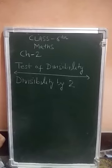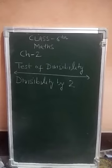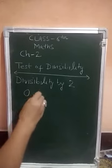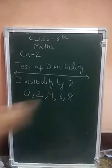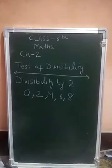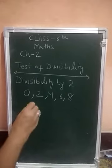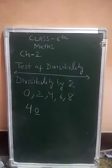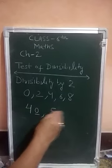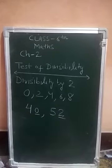A number is divisible by 2 if the digit at the 1's place is divisible by 2 — that is, if the digit at 1's place is 0, 2, 4, 6, or 8. For example, 40 is divisible by 2 because the digit at 1's place is 0. If I have the number 52, the digit at 1's place is 2, and 2 is divisible by 2.